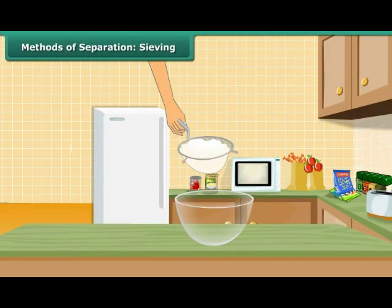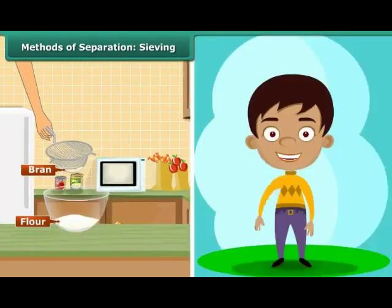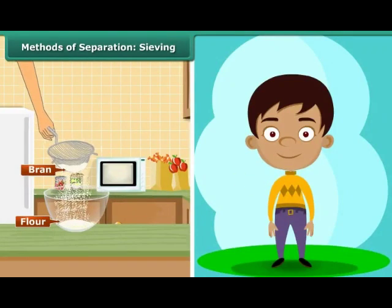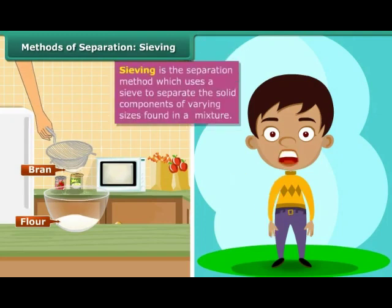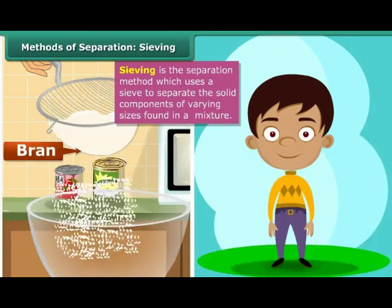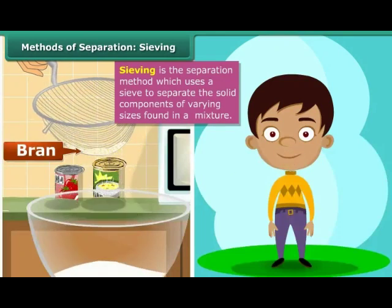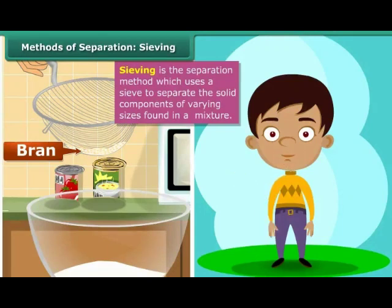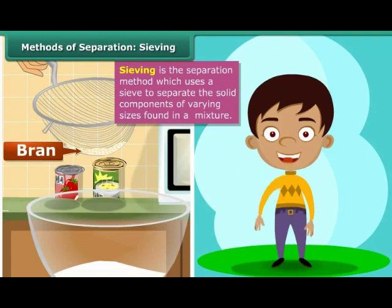Children, have you seen how your mother removes bran and other impurities from flour? They separate the coarse bran from the fine flour with the help of a sieve. This technique of using a sieve to separate the solid components of different sizes in a mixture is known as sieving. In this method, the mixture is placed on the sieve and shaken. Smaller particles pass through the holes of the sieve to the container placed below and are thus separated from the bigger particles that are retained in the sieve.